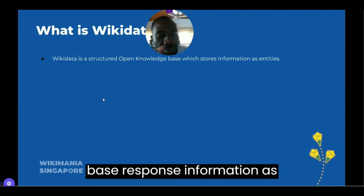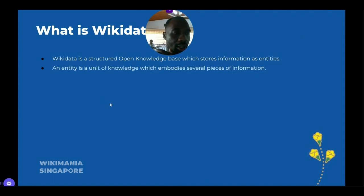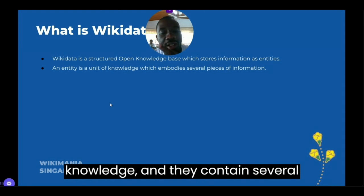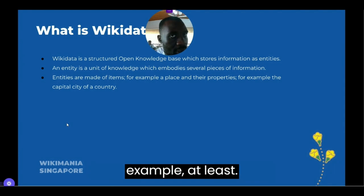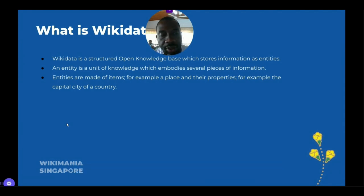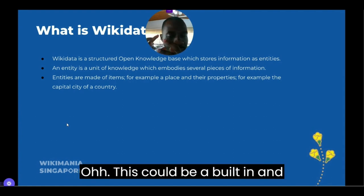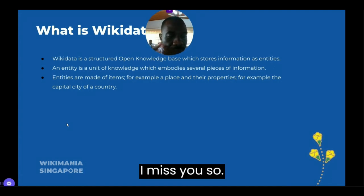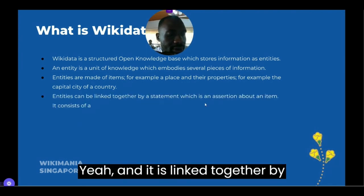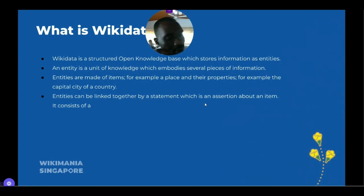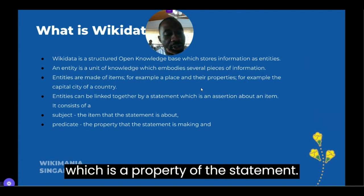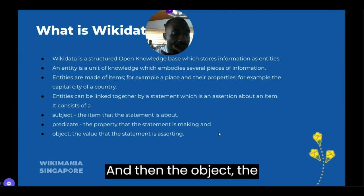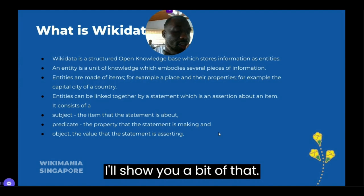That's where Wikidata comes in. Wikidata is a structured open knowledge base that stores information as entities. Entities are bodies of knowledge and they contain several pieces of information. They are made up of items which have properties. For example, a place could have the property of being the capital city of a country, or a building could have the property of being a museum. Entities can be linked together by statements — an expression of an item — which typically contain a subject, a predicate (which is a property), and an object (the value of that statement).